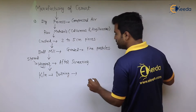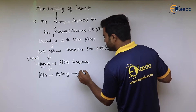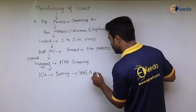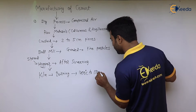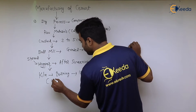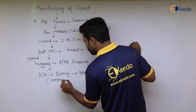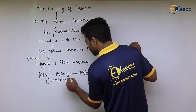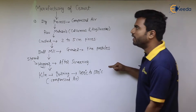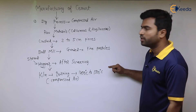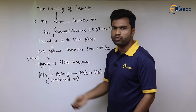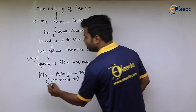From the hopper they are taken to the kiln for the burning process. Burning is carried out at a temperature of 1400 to 1500 degrees Celsius using compressed air. No water is added, which is why this procedure is called the dry process.